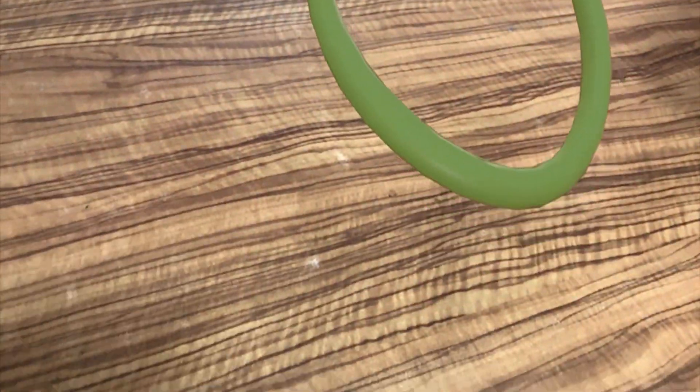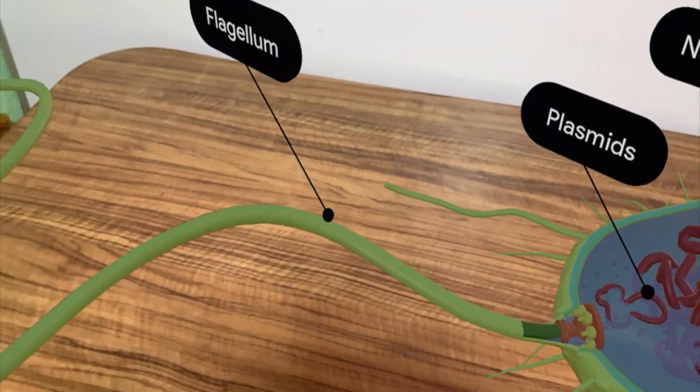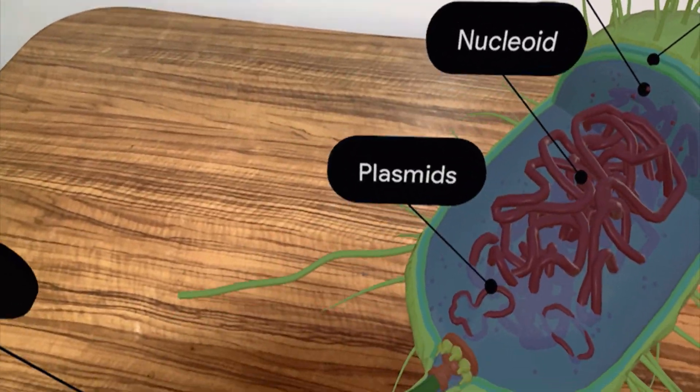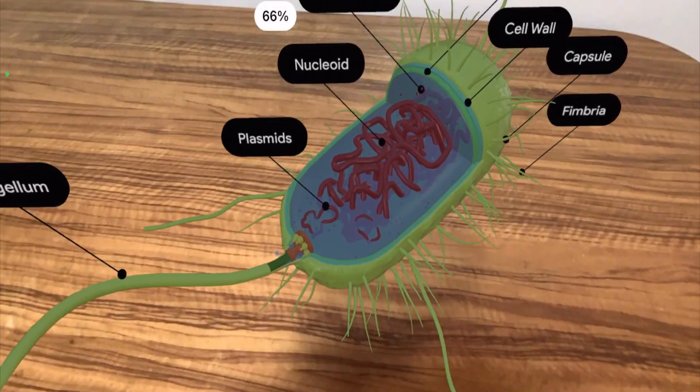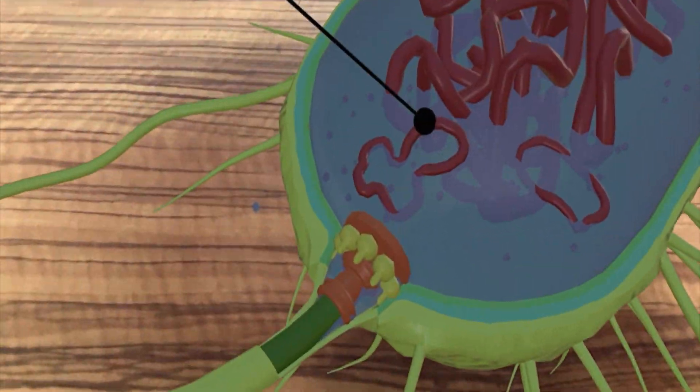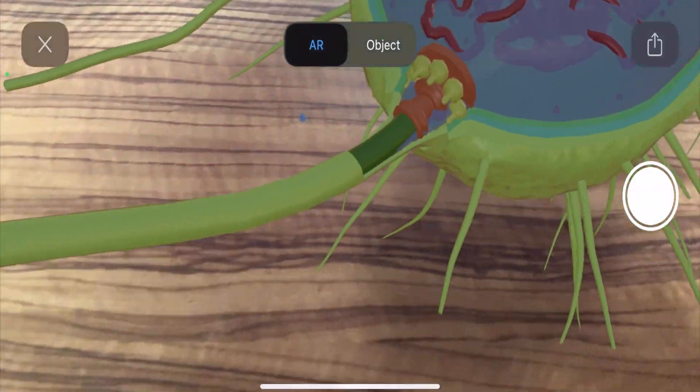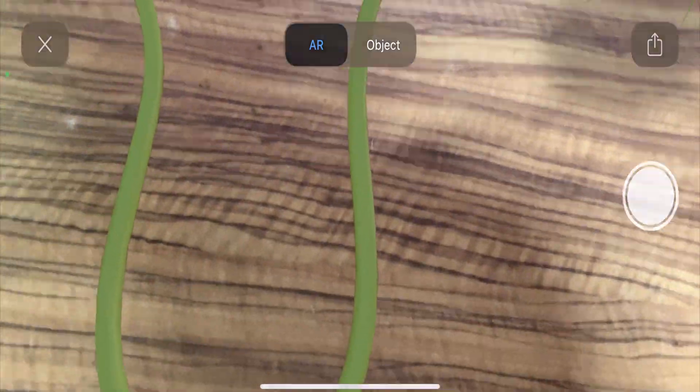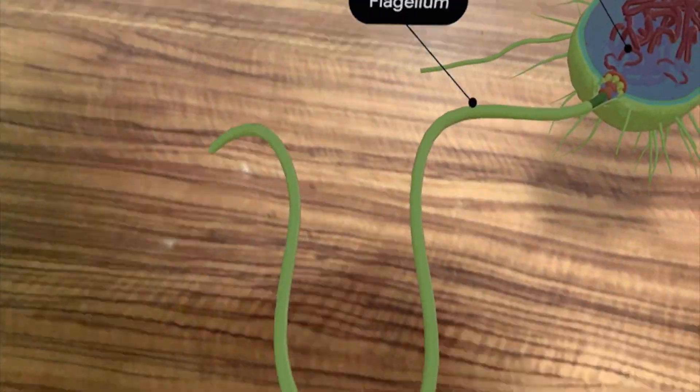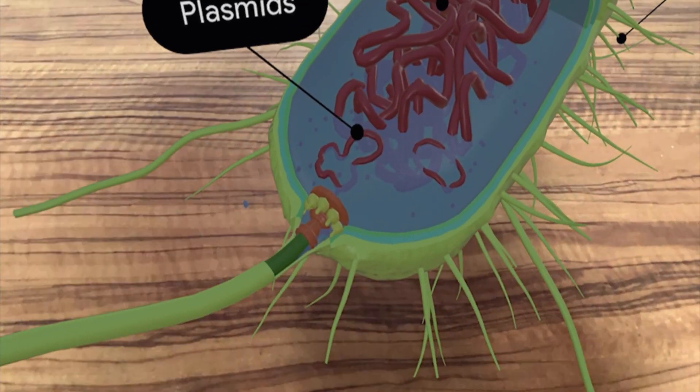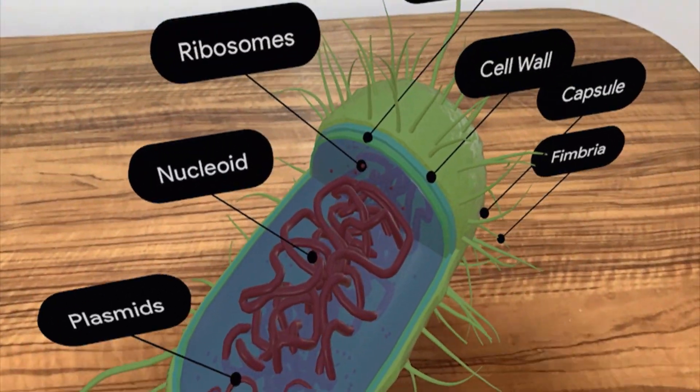And you can see the flagellum is connected and it is having the arrangement of motor protein which helps the flagella to rotate itself so that bacteria can move. I have made many videos on each of these organelles. I will give the link in the description below. Let us see the next one.